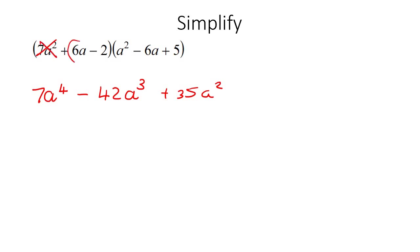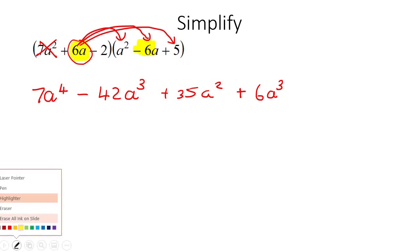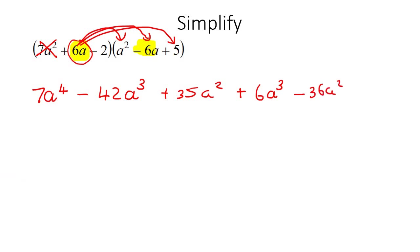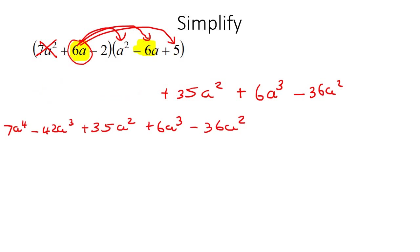Now we've finished with the first term, so we move on to the next one — 6a — and do the same thing: multiply it by each term. 6a multiplied by a squared is 6a cubed. Then 6a multiplied by negative 6a is negative 36a squared. Then 6a multiplied by 5 gives positive 30a.